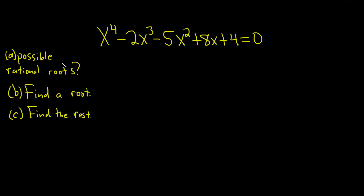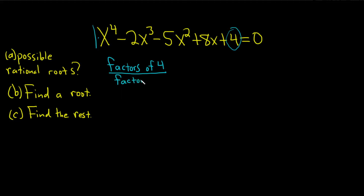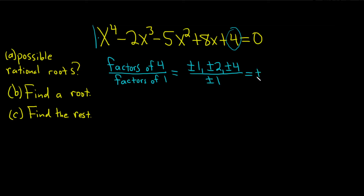We'll start by doing part A — finding the possible rational roots. You always look at the last number, which is the constant term, over the leading coefficient. So it's always factors of the constant term over factors of the leading coefficient. The factors of 4 are plus or minus 1, plus or minus 2, and plus or minus 4. And the factors of 1 are just plus or minus 1. So 1 over 1 is 1, 2 over 1 is 2, and 4 over 1 is 4.